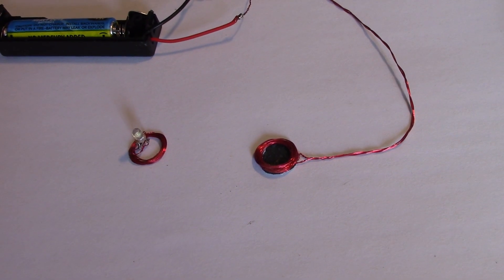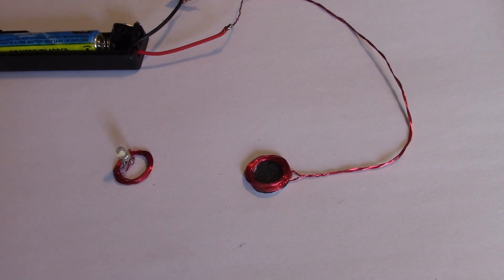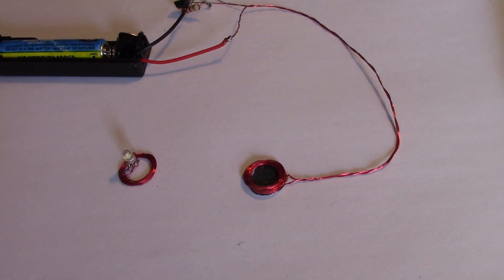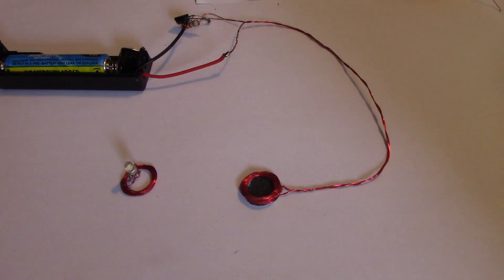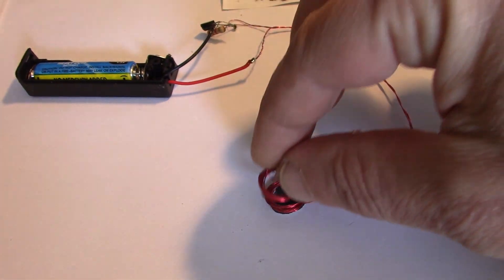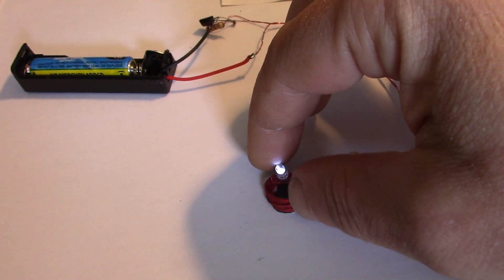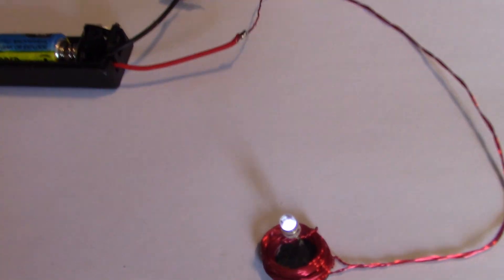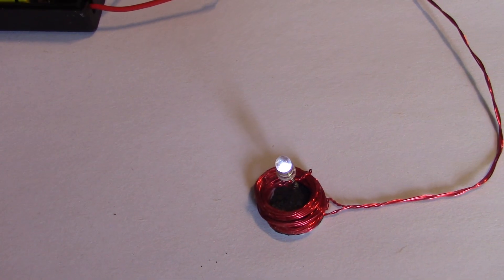I've then glued it underneath the transmitting coil, and now we can answer the question of whether that makes the receiver coil work or not. Pick this up, drop it on, and there we are. The light's on. It did indeed fix it.